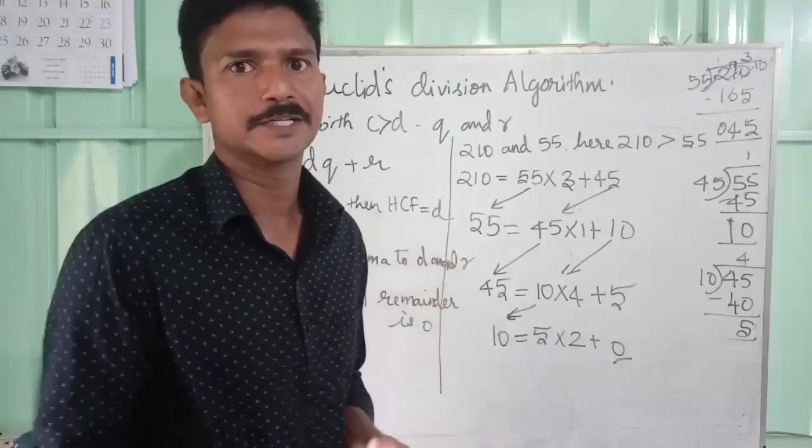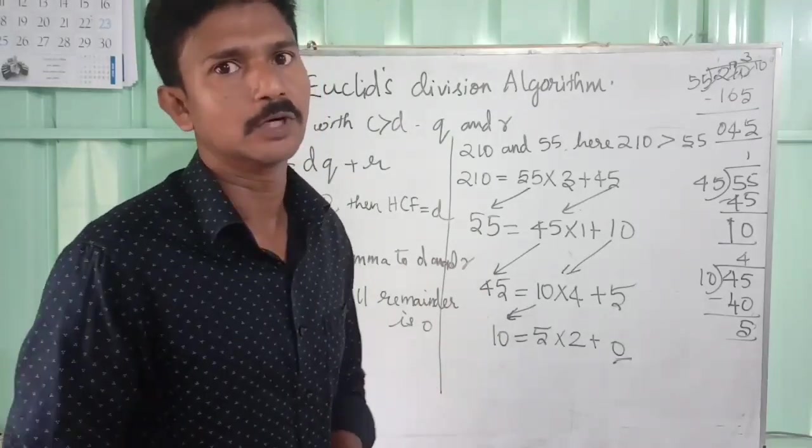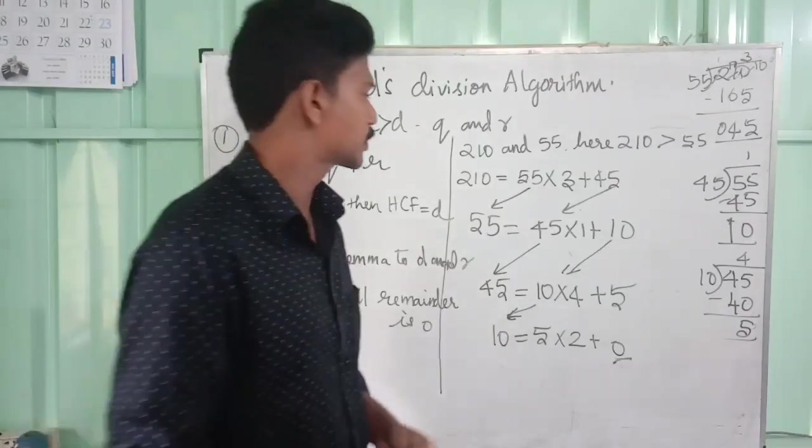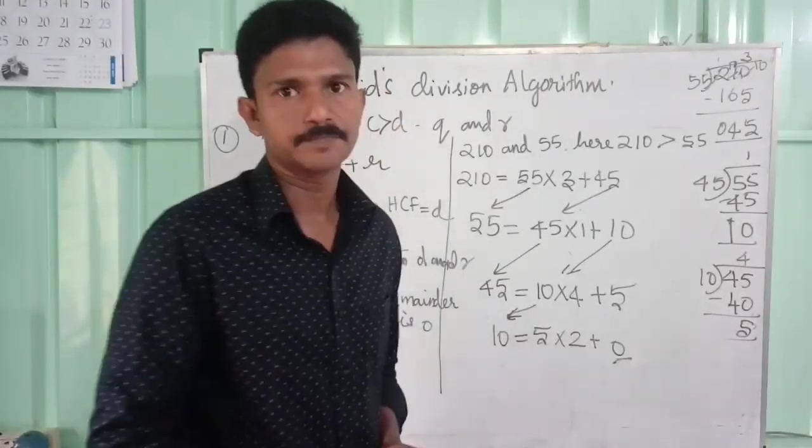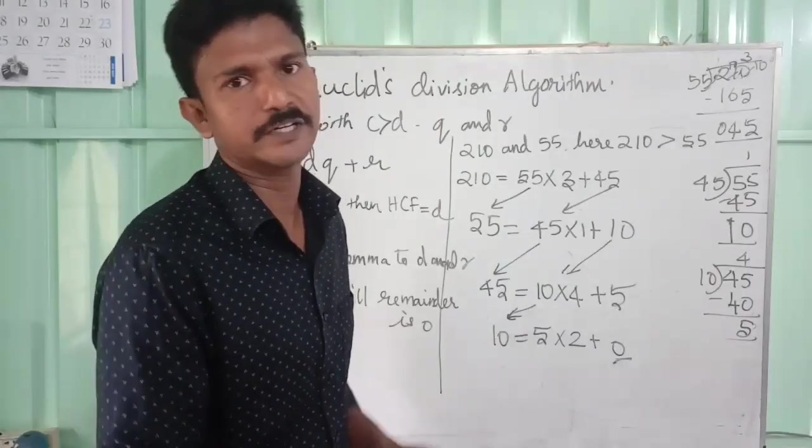Remainder is 0, so we can stop here. At this time, HCF is the divisor. Here the divisor at this stage is 5. So 5 is our answer.